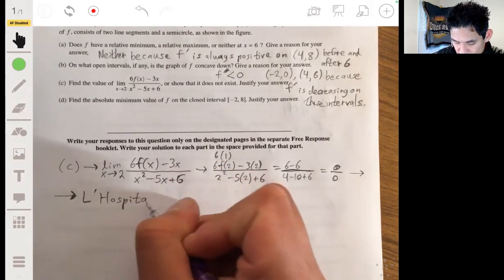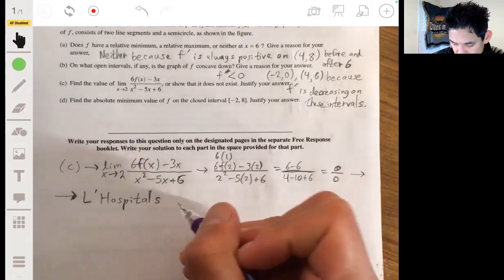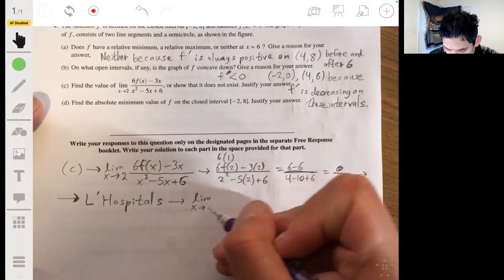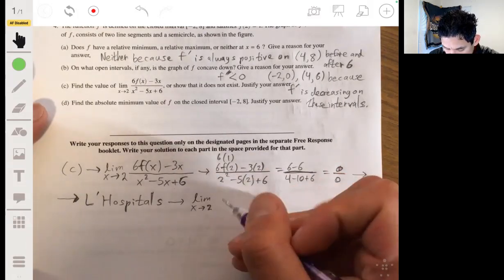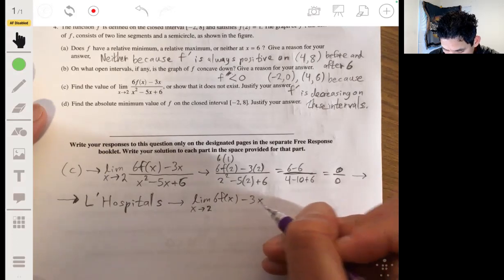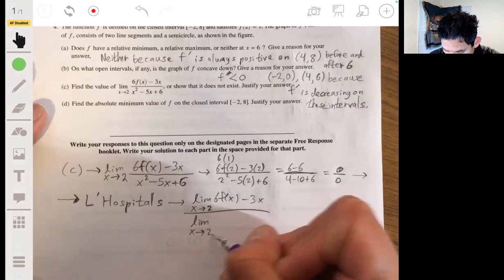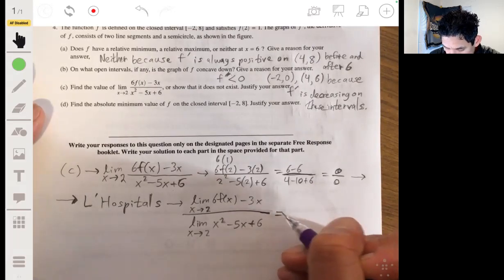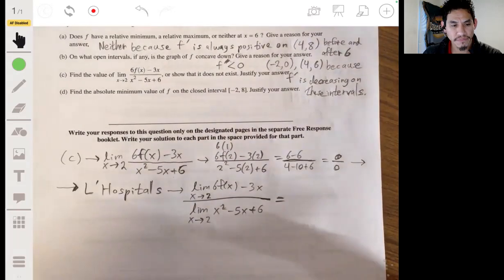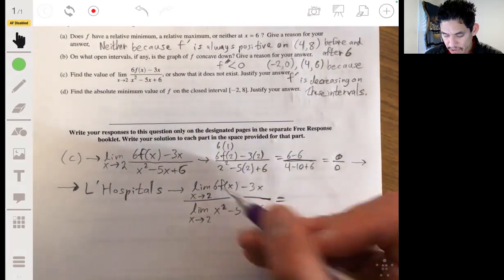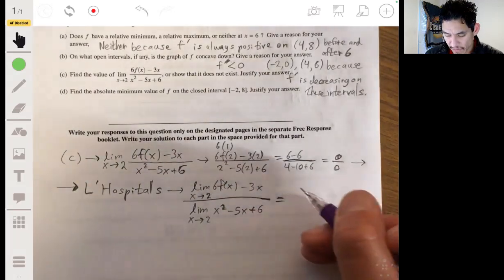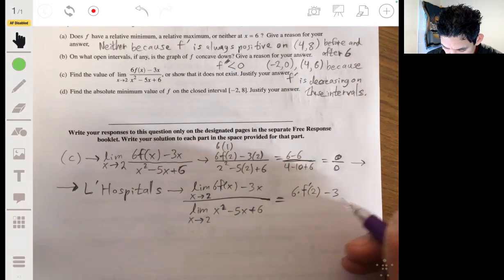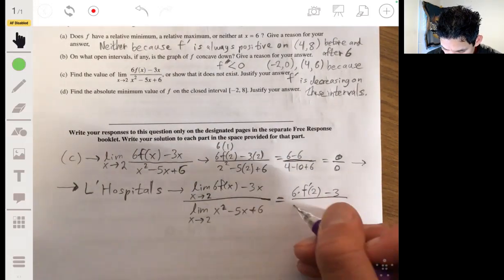So this is going to require us needing help from L'Hospital's rule. We're going to use L'Hospital's rule. And let's write the limits piece by piece. So the limit on the top, limit as x approaches 2 of 6 times f of x minus 3x over the limit as x approaches 2 of x squared minus 5x plus 6. So what we want to do is take the derivative of the top. Taking the derivative of the top, we'll get 6 times f prime of 2 minus 3 over 2x minus 5.